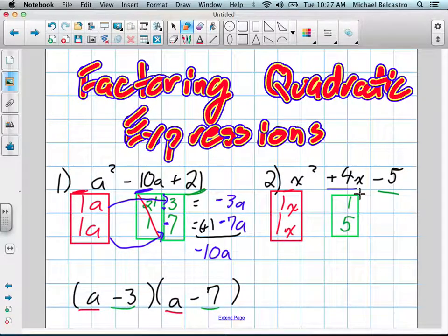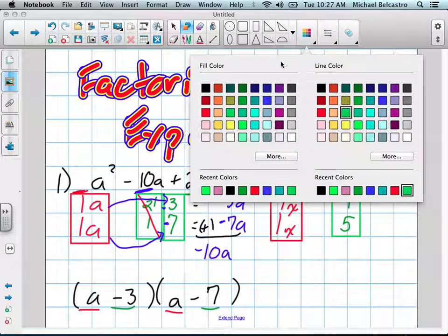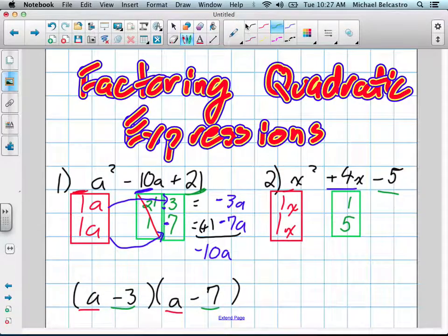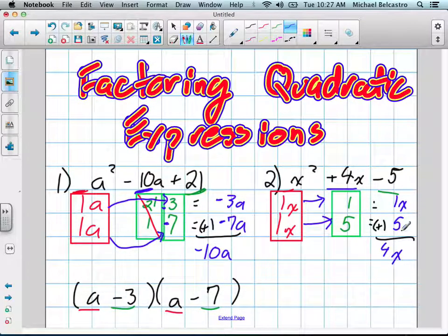As long as it's factorable, which we do need to find out. We know the product's got to add up to 4x. We're going to get 1x and 5x. If 1 is a negative term, this addition will work. 5 plus negative 1 will give us 4.